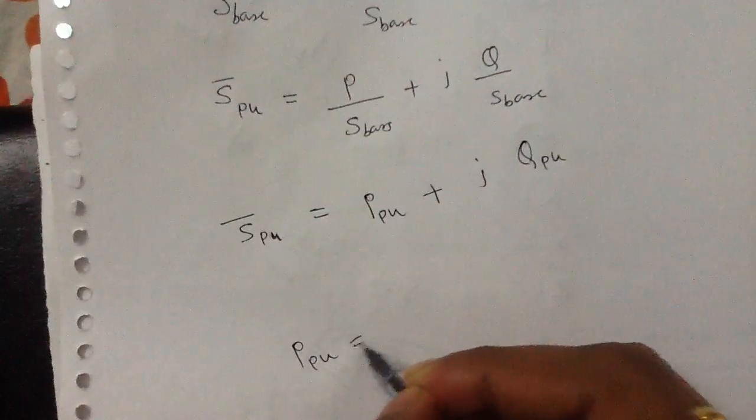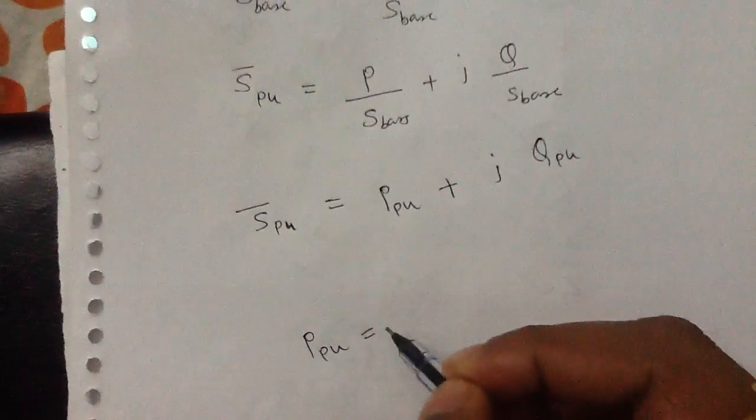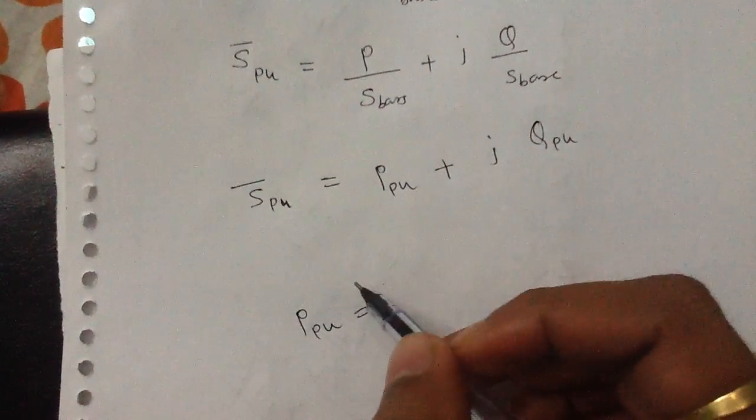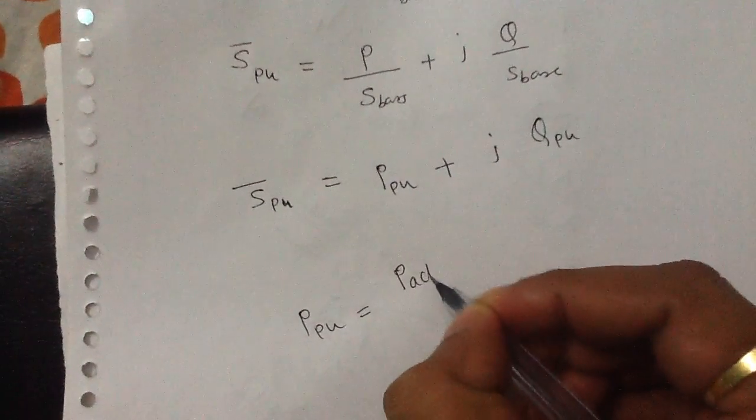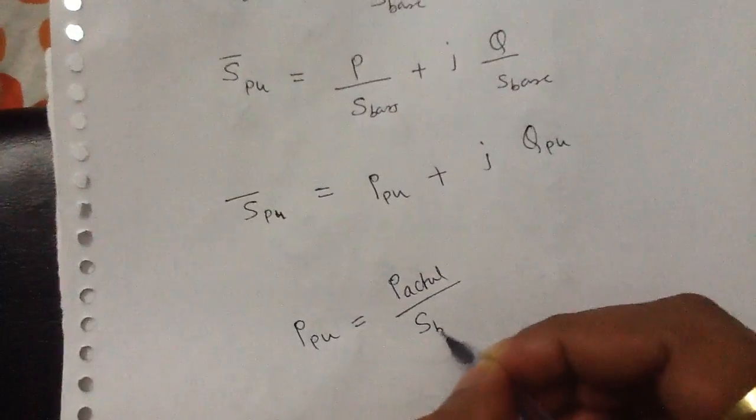If you want to write the value of the per unit real power, then you have to write P actual divided by S base.